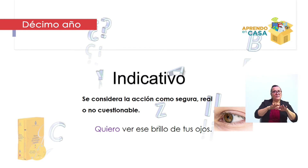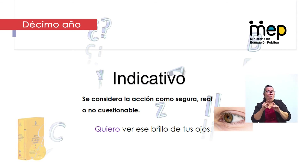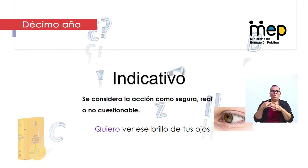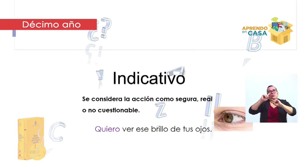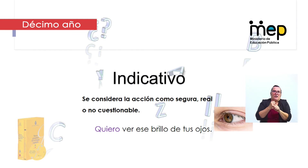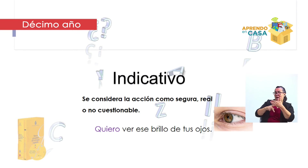Laura pregunta: ¿el modo indicativo es solo en presente? No. El modo indicativo se puede usar en cualquier tiempo: presente, futuro o pretérito. ¿Qué me dice el modo indicativo? Que es un hecho real, algo que sí va a pasar, que pasó o que pasará. No es una suposición. Por ejemplo, 'quiero ver ese brillo de tus ojos' — es un hecho que se va a dar, ese indicativo. Laura, ¿puedes darme un ejemplo? 'Este programa se transmite por Repretel.' Perfecto, es un hecho que se está dando.